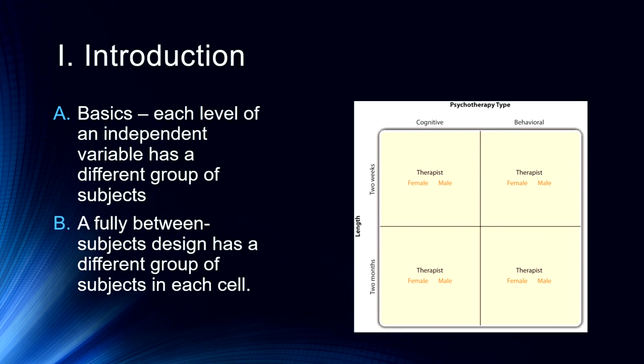We have two weeks versus two months, and cognitive versus behavioral therapy. So now we have one group of people in the two weeks of cognitive therapy, another group of people in the two months of cognitive therapy, group of people in the two weeks of behavioral therapy. So finally we have separate groups in each of these what we would call cells. We will take a look at these kind of complex designs in the next lecture.